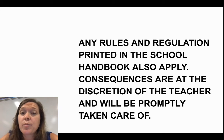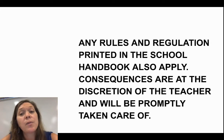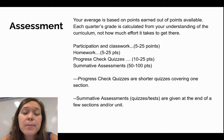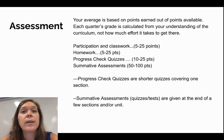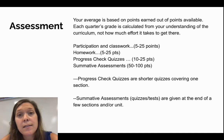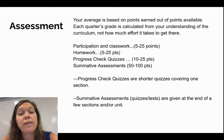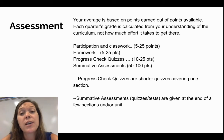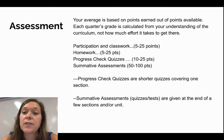Any other rules and regulations in the school handbook also apply; consequences are at the discretion of the teacher. Your grade is based on points earned out of points available. Your quarter grade is calculated from your understanding of the curriculum. Participation and classwork will be in the 5–25 point range. Homework will be worth 5–25 points depending on the assignment. Progress check quizzes will be around 10–25 points, and summative assessments will be 50–100 points.